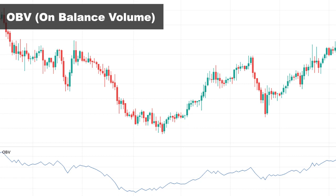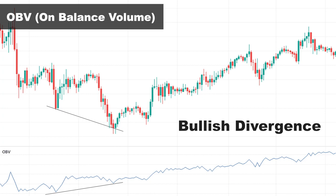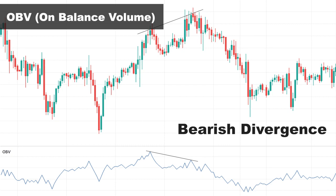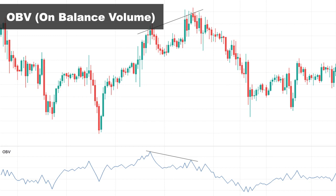The most important signal OBV gives us about smart money flow is divergence. When the price makes a lower low or is moving flat, but OBV makes a higher low in the same period, this shows that buying volume is building and a reversal to the upside is possible. On the other hand, when the price makes a higher high or is moving flat but OBV makes a lower high, this divergence shows that selling volume is building and a price decline is possibly going to happen.